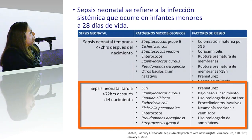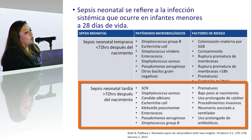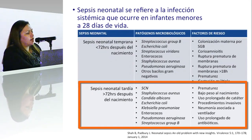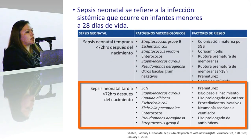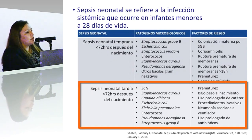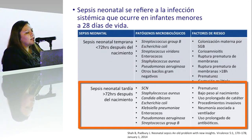En la sepsis tardía las bacterias cambian. Tenemos en primer lugar a Staphylococcus coagulasa negativo, que va a jugar un papel muy importante en los recién nacidos prematuros. Actualmente se asocia no solo a sepsis bacteriana, sino también a meningitis e infección de vías urinarias. Este microorganismo, Staphylococcus coagulasa negativo, principalmente epidermidis, se está convirtiendo en un grave problema para los recién nacidos prematuros.